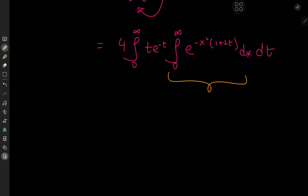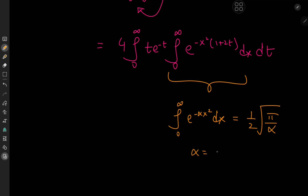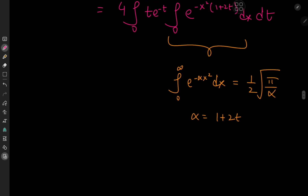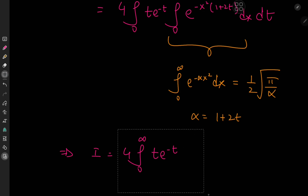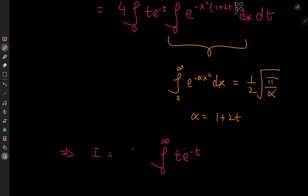This inner integral is actually a Gaussian integral, and we know that the integral from 0 to infinity of e to the negative alpha x squared dx equals one-half of root pi over alpha. In our case, alpha equals 1 plus 2t. So the target integral I is now 4 times the integral from 0 to infinity of t times e to the negative t times root pi over (1 plus 2t), with a factor of one-half — giving 4 times root pi over 2, and in the denominator, root (1 plus 2t) dt.